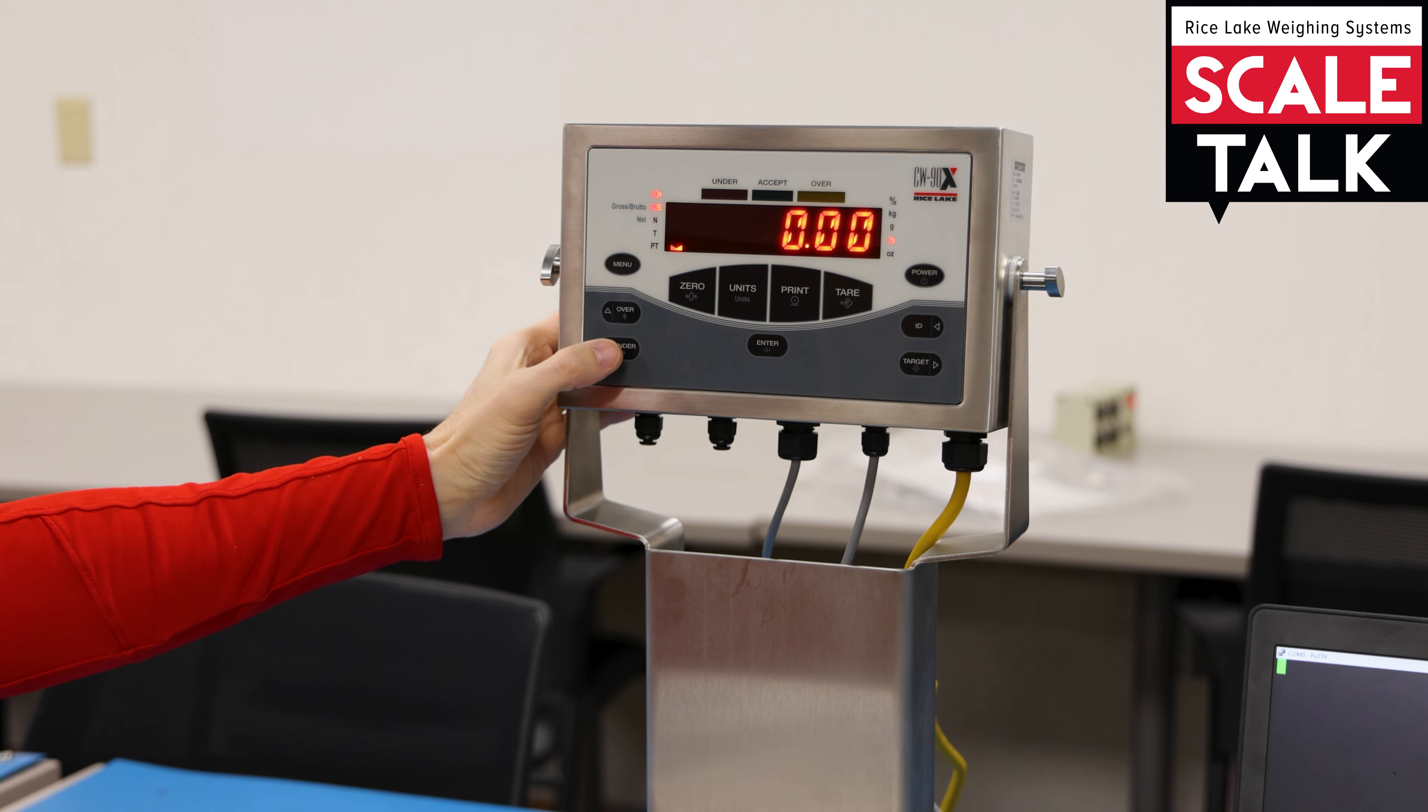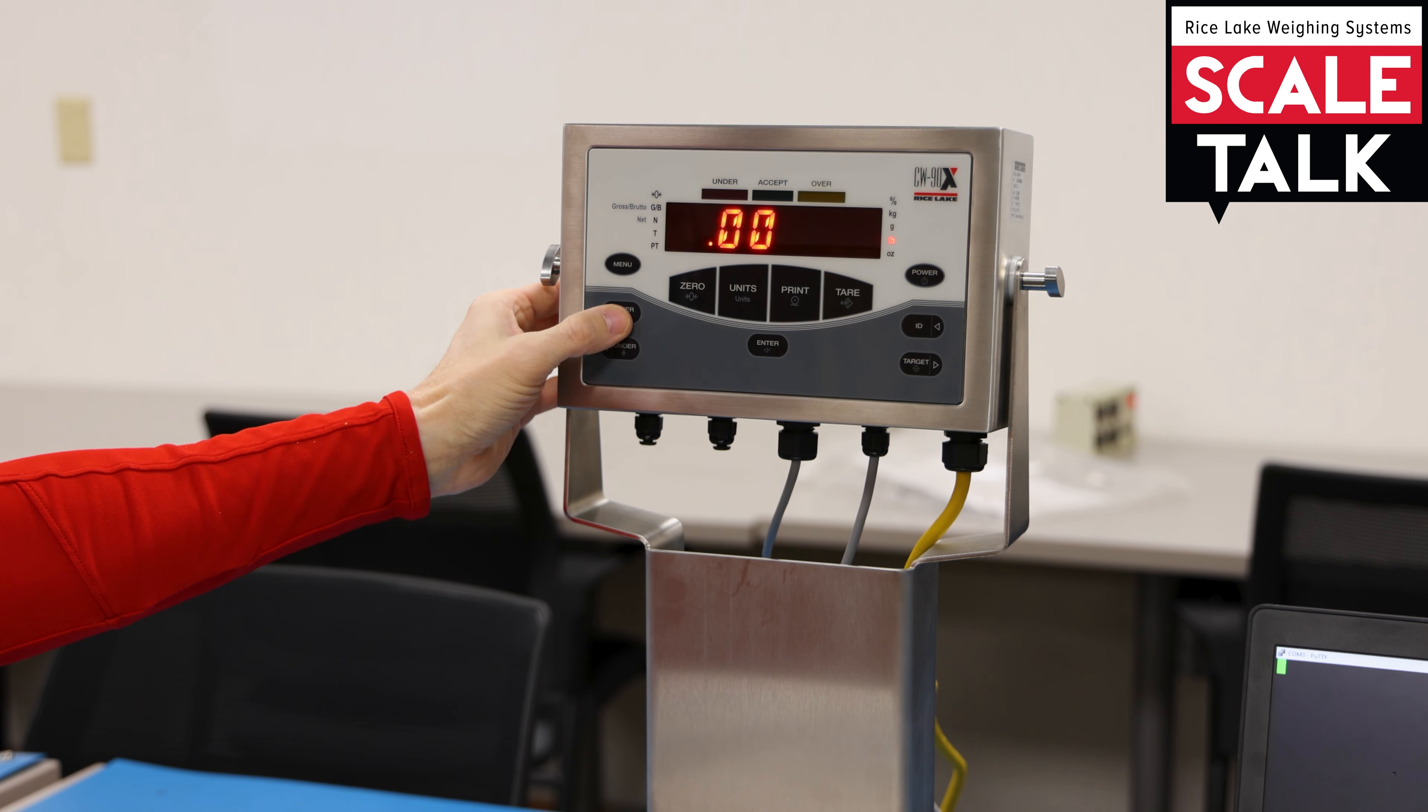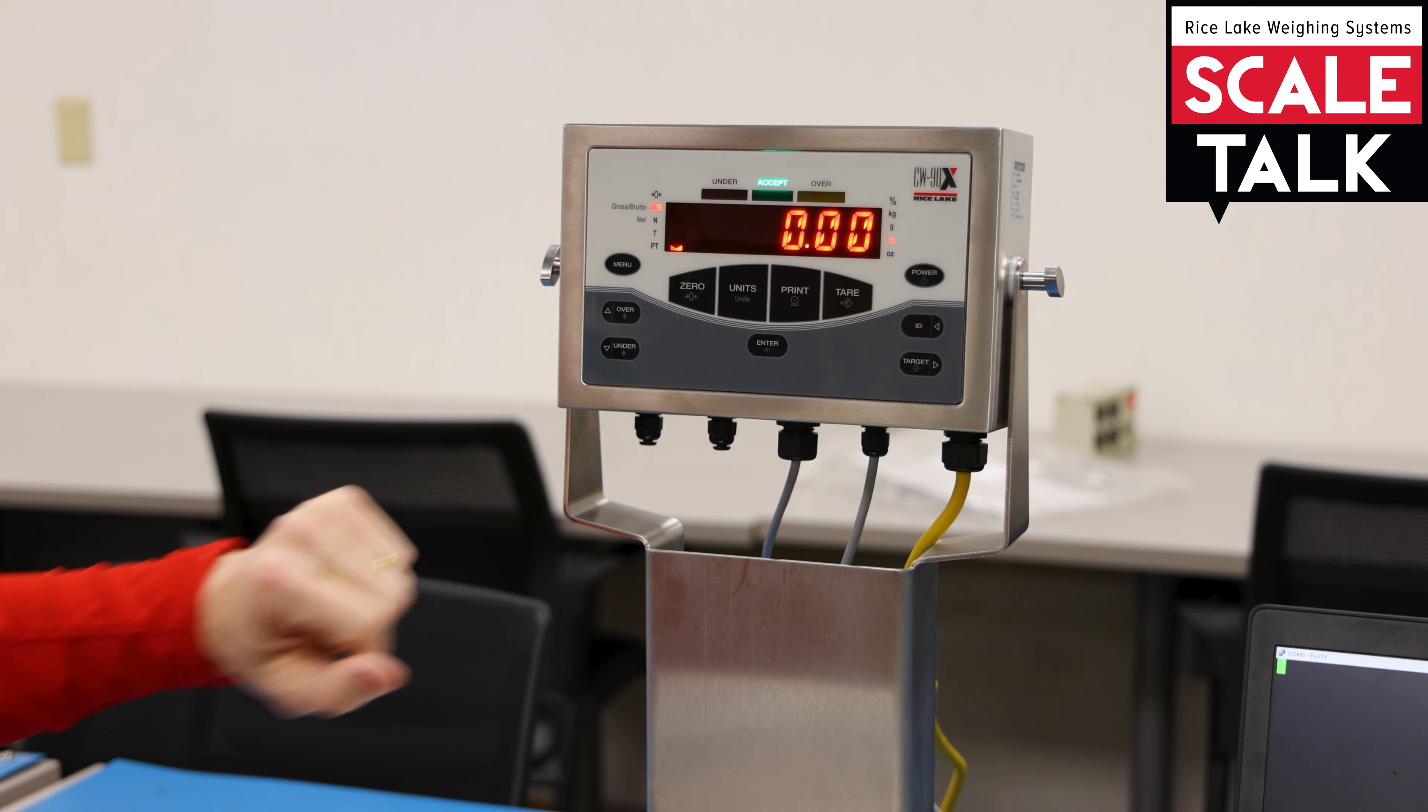And then I want to set my under condition. So maybe I want this to be between three and five pounds. I don't want something under three. That would be too low. So I'll set my value here and press enter.